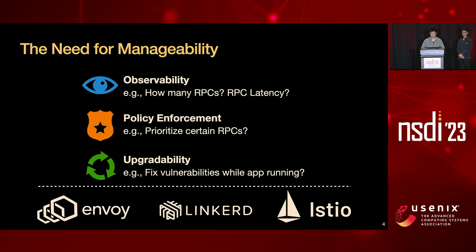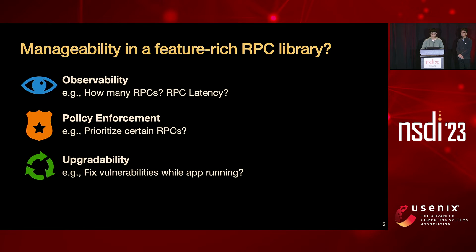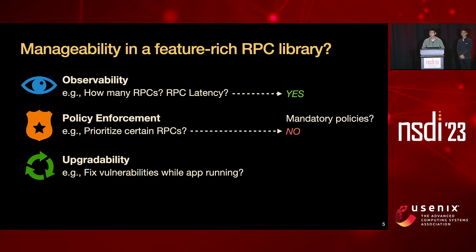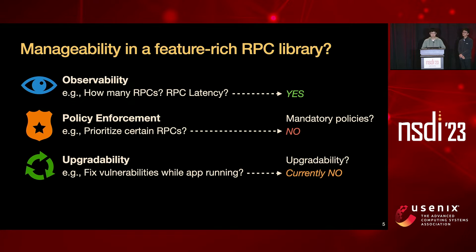There are also startup companies and open source projects that aim to solve these related issues. Some of these needs, such as observability, can be realized by a feature-rich RPC library, for example gRPC. However, some policies are mandatory rather than discretionary, such as access control and central QoS control, and the network operation team may not trust code linked into an application library. The upgradability of a feature-rich RPC library is also limited — to upgrade an RPC library, the user application must be recompiled and rebooted, and there is no existing RPC implementation targeting live upgrade.